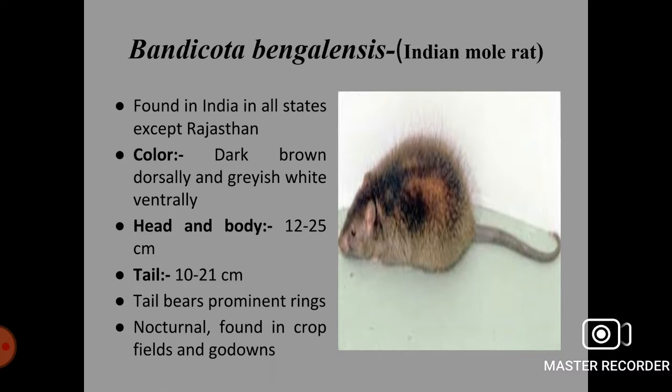Next species is Bandicota bengalensis, the Indian mole rat. It is found in all states of India except Rajasthan. Colour is dark brown dorsally and greyish white ventrally. Head and body length is 12 to 25 cm, and tail length is 10 to 21 cm. The tail bears prominent rings on it. It is a nocturnal pest found in crop fields and godowns.